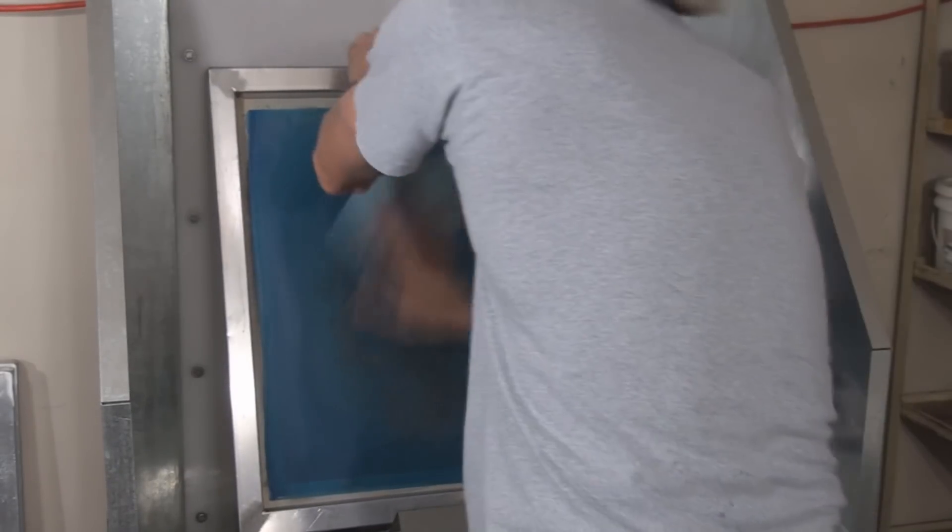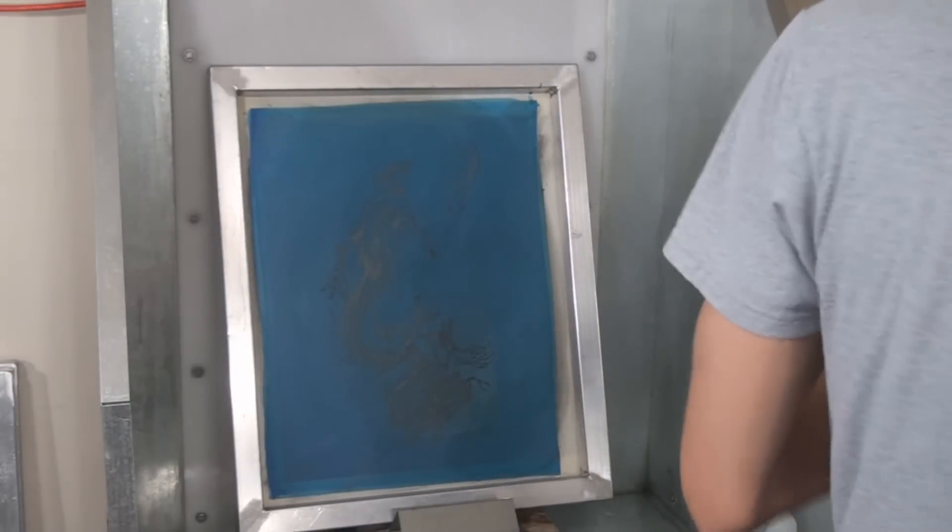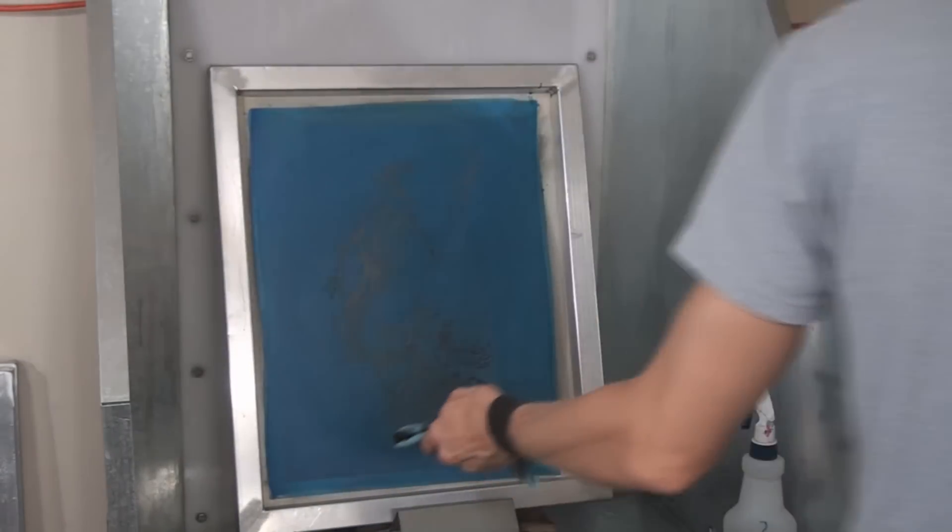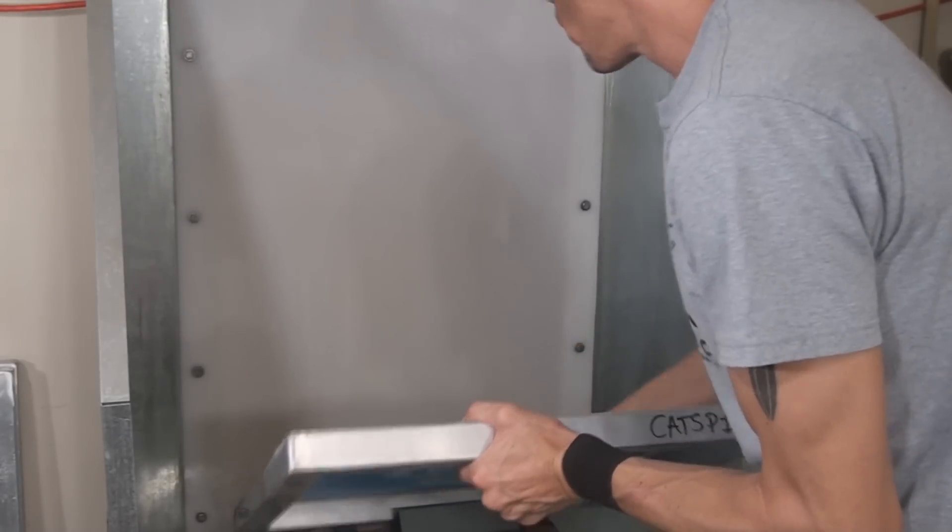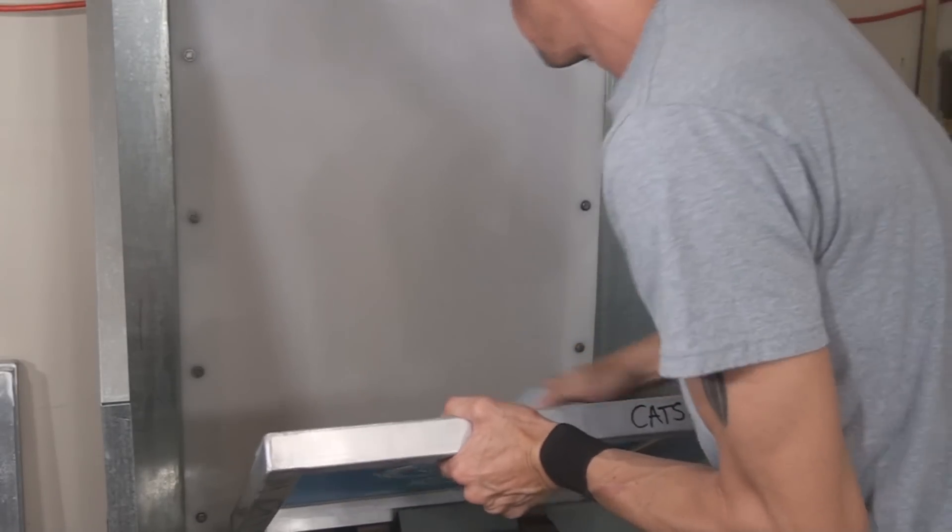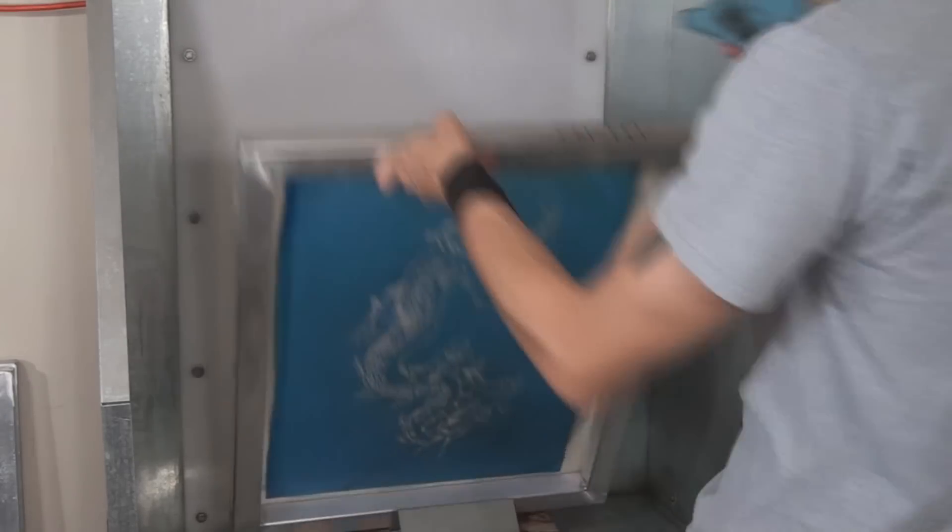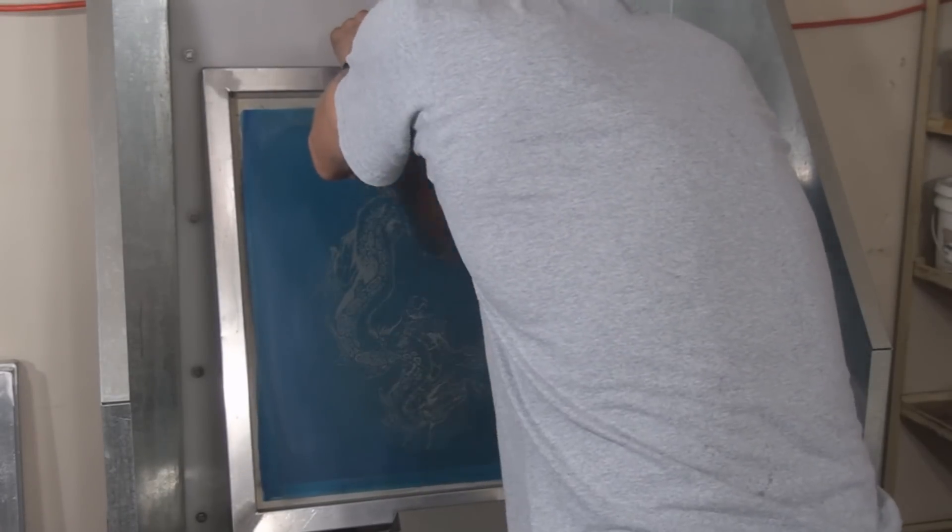And that's pretty much all there is to it. At this point, you would just wipe it down to the extent that you need the screen clean. If it's a screen that you're going to use the same ink on next time, you might not have to clean it thoroughly, you can just take the ink off.